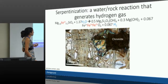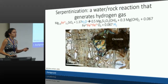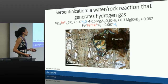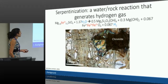This reaction has been very well studied at high temperatures at hydrothermal vents or spreading ridges under the ocean. But it hasn't been well characterized at low temperatures — temperatures under 120 degrees Celsius — where life can actually be actively harnessing the hydrogen being generated from these reactions.